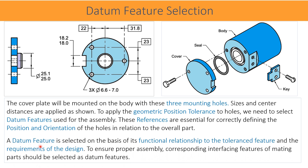A datum feature is selected on the basis of its functional relationship, the tolerance feature, and the requirement of the design. The feature which is to be toleranced is called a tolerance feature. In this case, all three holes are the tolerance feature. To ensure proper assembly of cover and body, the corresponding interfacing features of mating parts should be selected as datum features.